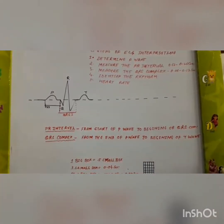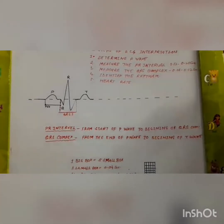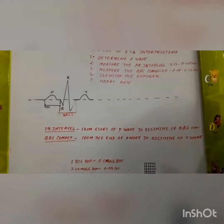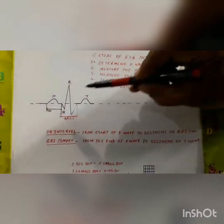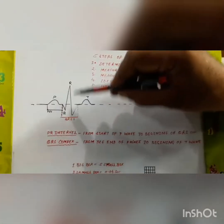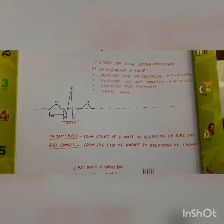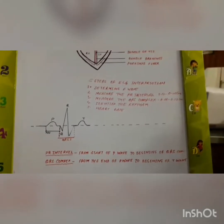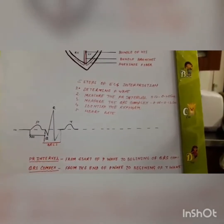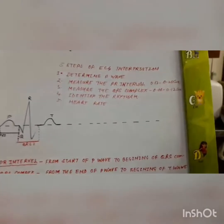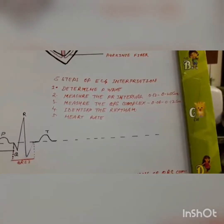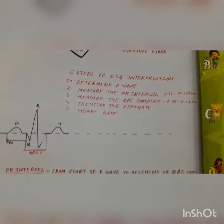After every contraction, there is a relaxation. Now the question arises: where is the atrial repolarization? Actually, there are a lot of muscles in the ventricle, so the QRS complex is very tall and it masks the relaxation of the atrium. So the relaxation of the atrium lies somewhere within it. This is the basic diagram of an EKG.